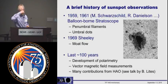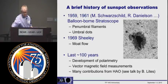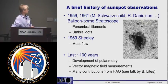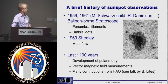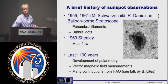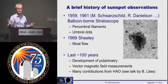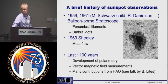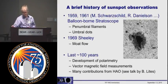Over the last 100 years, most information about the structure of sunspots has come from the development of polarimetry — the ability to measure vector magnetic fields. There are many contributions from HAO, and this will all be explained much better by Bruce Light, so I won't say anything about these very recent developments.